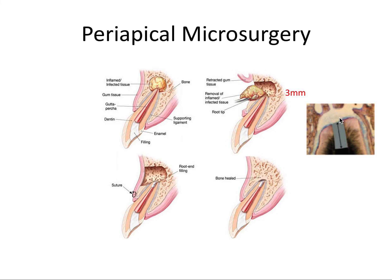After cutting off the root tip at a shallow bevel, you instrument the canal in a retrograde fashion with an ultrasonic instrument and prepare three millimeters of root end. So you cut off three millimeters of root tip, and then instrument three millimeters into what remains. Finally, you retrofill with mineral trioxide aggregate, or MTA, an excellent biocompatible material — visible here as the root end filling. Then you suture the soft tissue and allow the bone to heal, resulting in a root canal system ideally sealed from both the orthograde coronal direction and the retrograde apical direction.